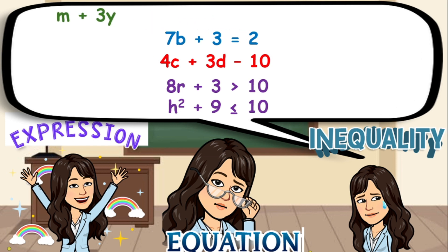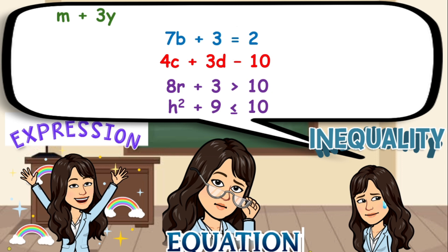Number 2: 7b plus 3 equals 2. Is it an expression, equation, or inequality? Very good, it is an equation. Number 3: 4C plus 3d minus 10. Is it an expression, equation, or inequality? Alright, it is also an expression.